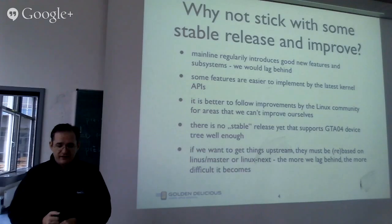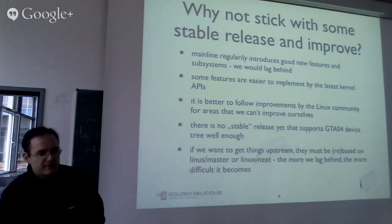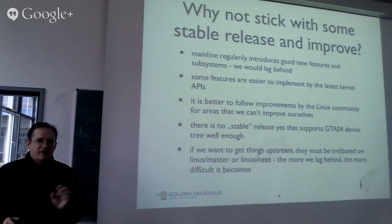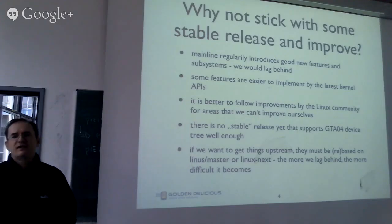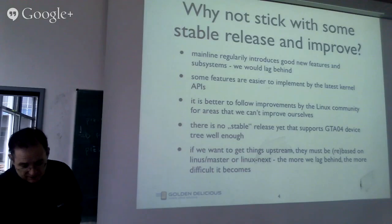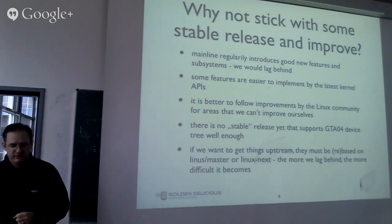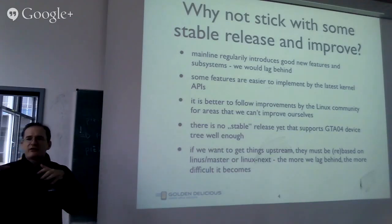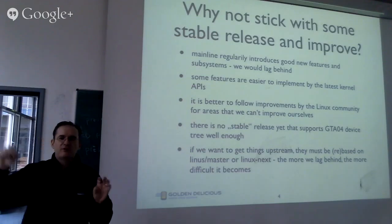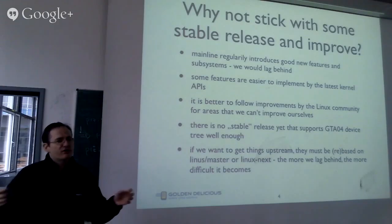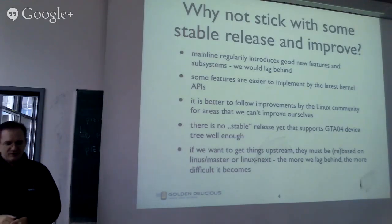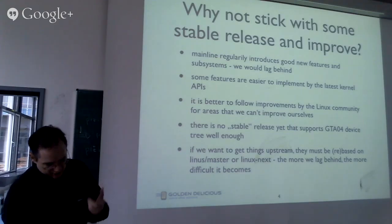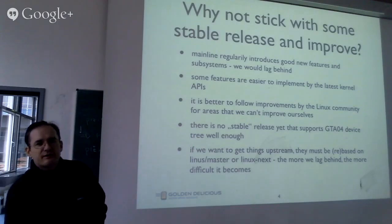There is no stable release that supports these devices with a device tree — I'll explain what that is later. So 3.12 is basically the last kernel we could use as a stable basis. And practically, if we want to get things upstream into official Linux, they must be based on the latest development. If we spend half a year on an old stable release, it becomes too old for them to accept.